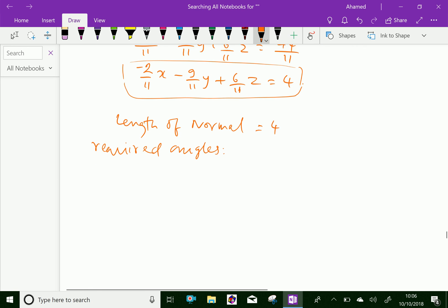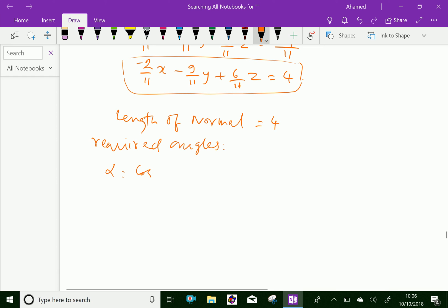Alpha equals cos inverse of minus 2 over 11, beta equals cos inverse of minus 9 over 11, and gamma equals cos inverse of 6 over 11. Please subscribe to our YouTube channel.